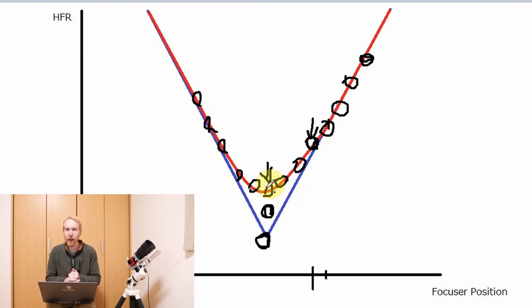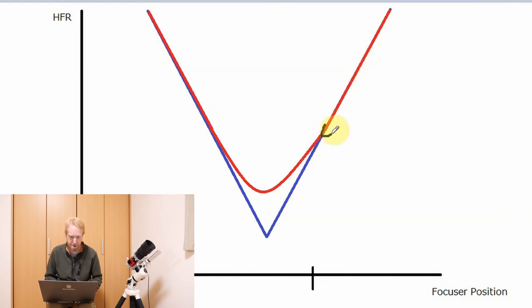Focuser backlash is the worst thing ever and it's very present in some focusers like the ZWO EAF. It can be also present in the telescope focusing mechanism itself rather than in the electronic focuser itself. What does backlash do? Basically, backlash is if I move the focuser out and then I tell the focuser to move back in 10 steps, the motor inside of the electronic focuser moves but the shaft that's actually connected to the telescope does not move. That is backlash - there are some gears, reduction gears, that are not moving properly.